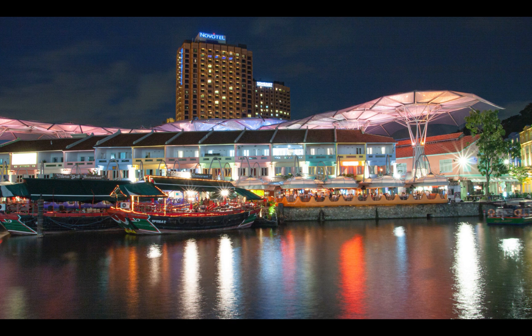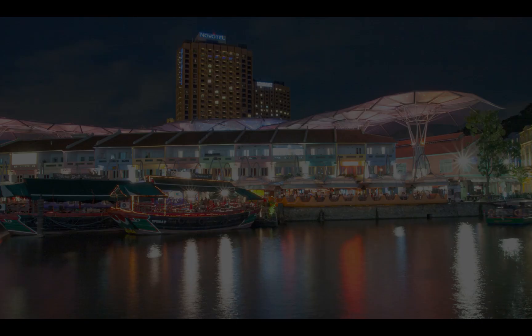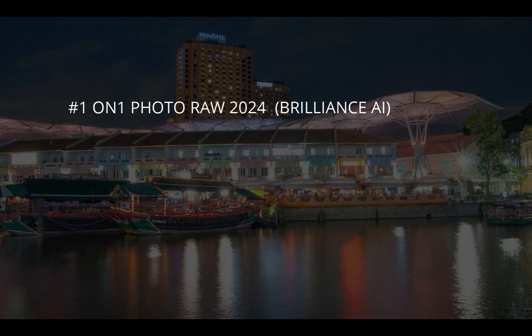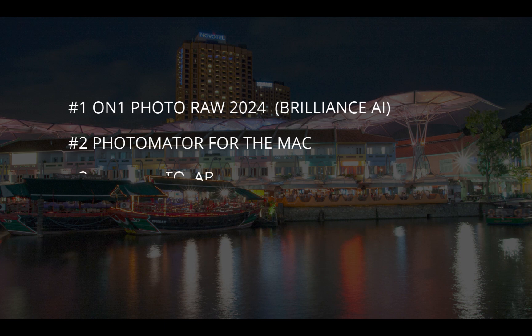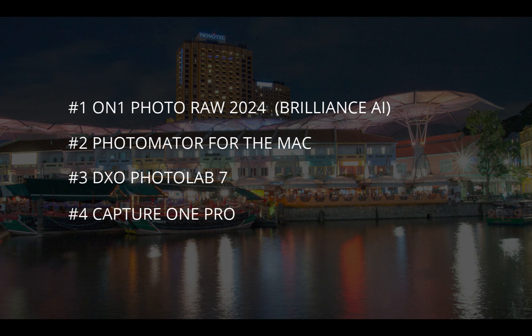Here are the identities of the RAW editors. Number one was edited using On1 Photo Raw 2024, mostly with Brilliance AI. Number two was edited with Photomator for the Mac. Number three was edited with DxO Photolab 7. Number four was edited with Capture One Pro, and number five was edited with Adobe Lightroom. Did you guess correctly?